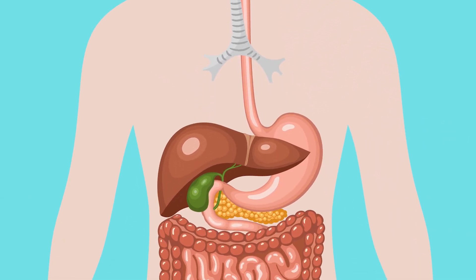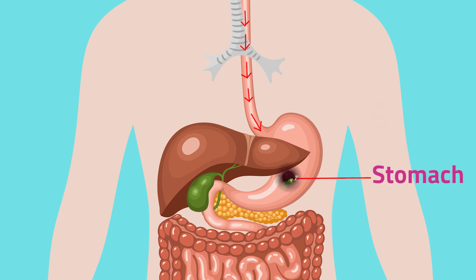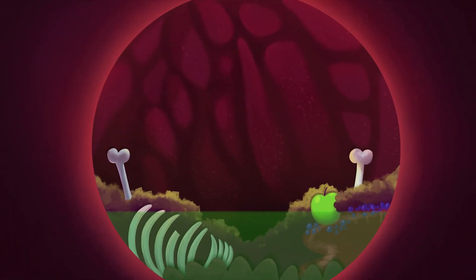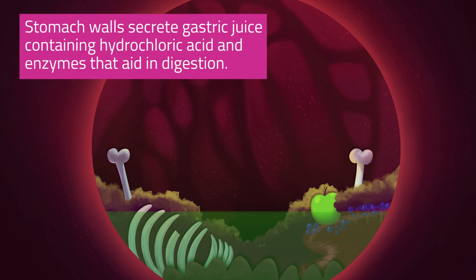The rhythmic, wave-like contractions of the esophagus, called peristalsis, force and push the bolus down to the stomach. The stomach is a large, bean-shaped muscular organ. The churning movement of the stomach walls further breaks down the food particles into smaller bits, while the glands along its walls secrete gastric juice containing hydrochloric acid and enzymes that aid in digestion.